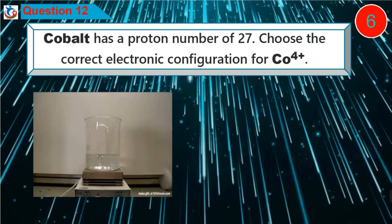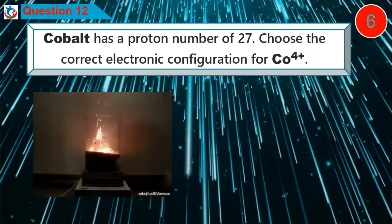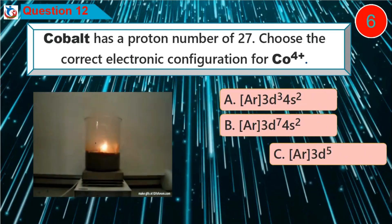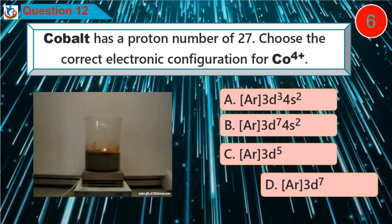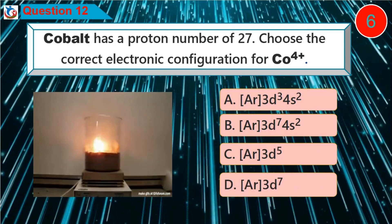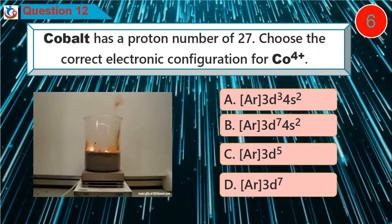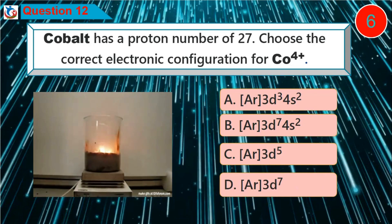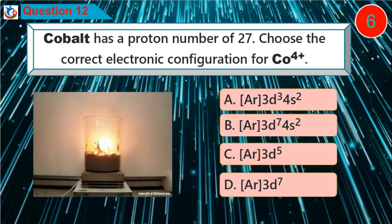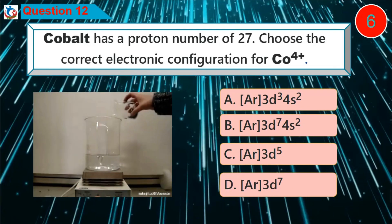Question 12: Cobalt has a proton number of 27. Choose the correct electronic configuration for Co4+ (Co four plus). Is it option A, B, C, or D?